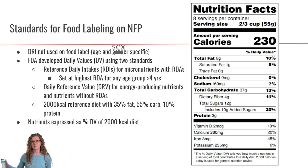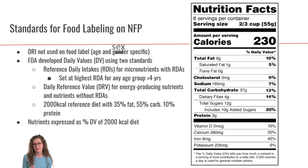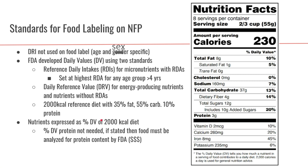So from there, the nutrition facts panel uses these daily values and expresses the nutrients in a food as a percent daily value of this 2,000 calorie diet. Looking at this example nutrition facts panel, we can see different nutrients listed as percent daily values. At eight grams of fat, that is 10% daily value according to this standard reference diet.